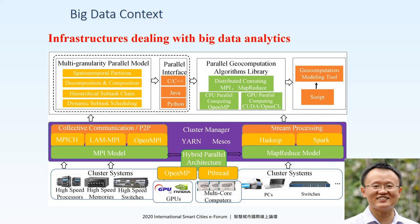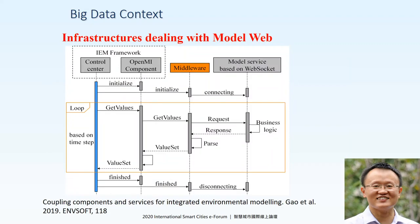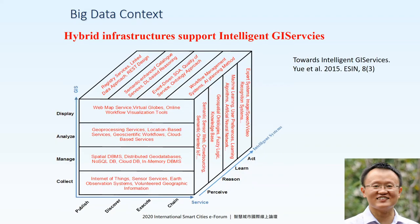For a model web, we also need the infrastructure, because traditionally we are focusing on the spatial analysis function — like the buffer, overlay, and traditional geoprocessing functions. But in the environmental modeling domain, the model spatial temperature, for example, is often executed based on time step. So it's a long-term bi-directional interaction process. We need to move the integrated environmental modeling framework to the web environment to support model sharing and interaction on the web.